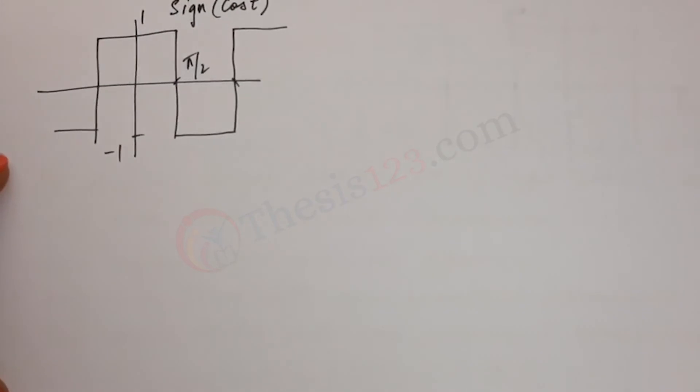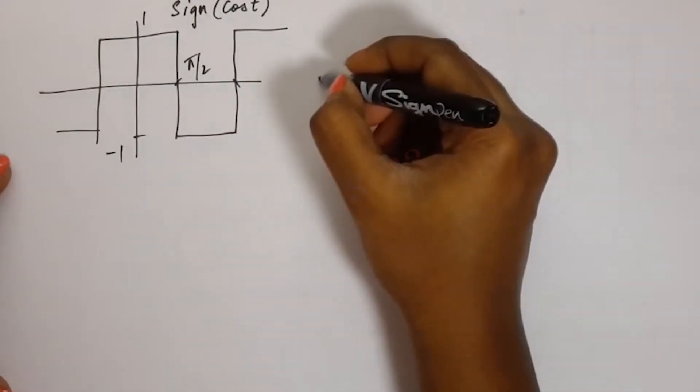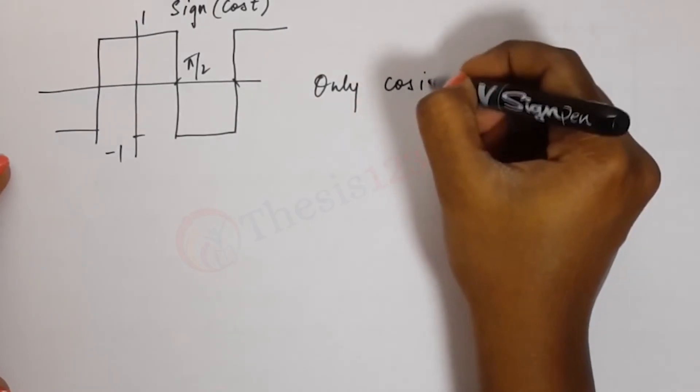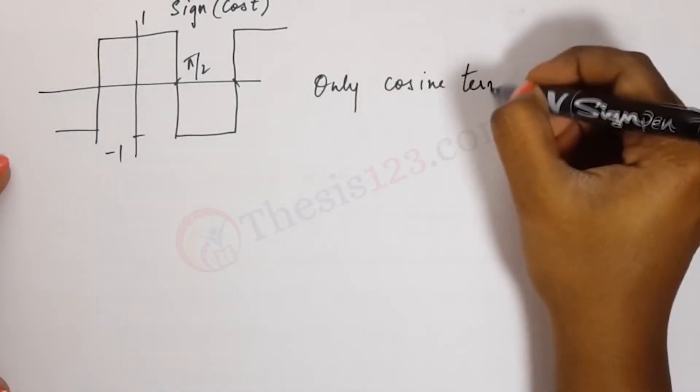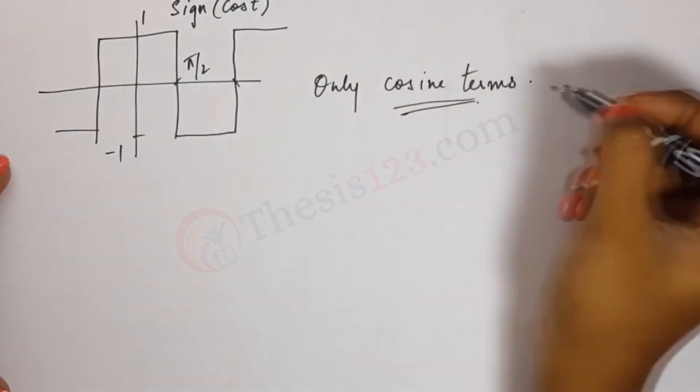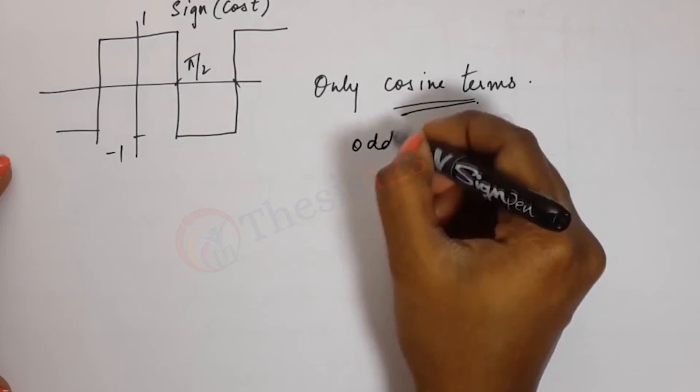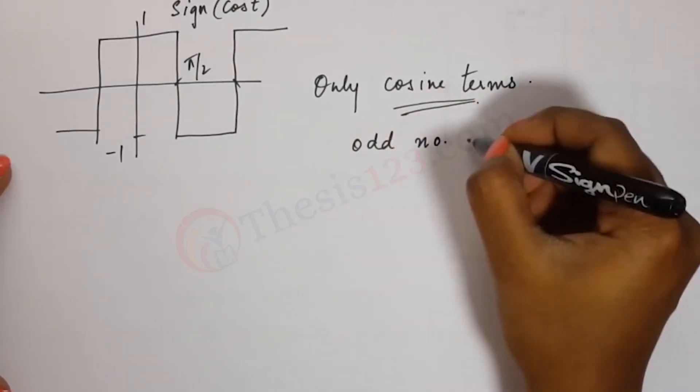Now you will notice that the function is half wave symmetric, right? So its Fourier series consists of only cosine terms. And as the definition for a signum function states that it is an odd function, it will contain only odd numbered harmonics.